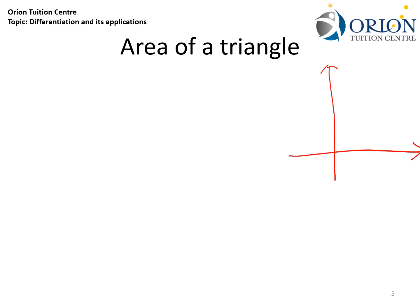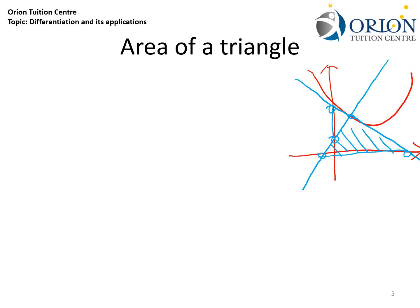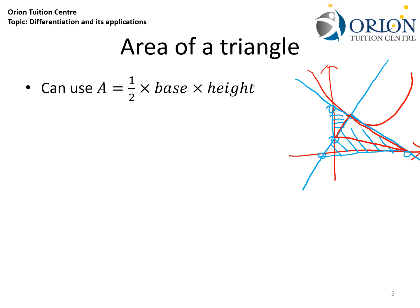For any curve, whenever we find the tangent and normals, they will always intersect the x and y axes at certain points. Those points, together with the original point, will form certain triangles, and sometimes we are asked to find the area of these triangles. If the triangles have their bases on the same axis, we can find the area easily using half base times height. However, sometimes we may be asked to find the area of triangles where the points are not aligned with an axis, making it more difficult to define the base and height.